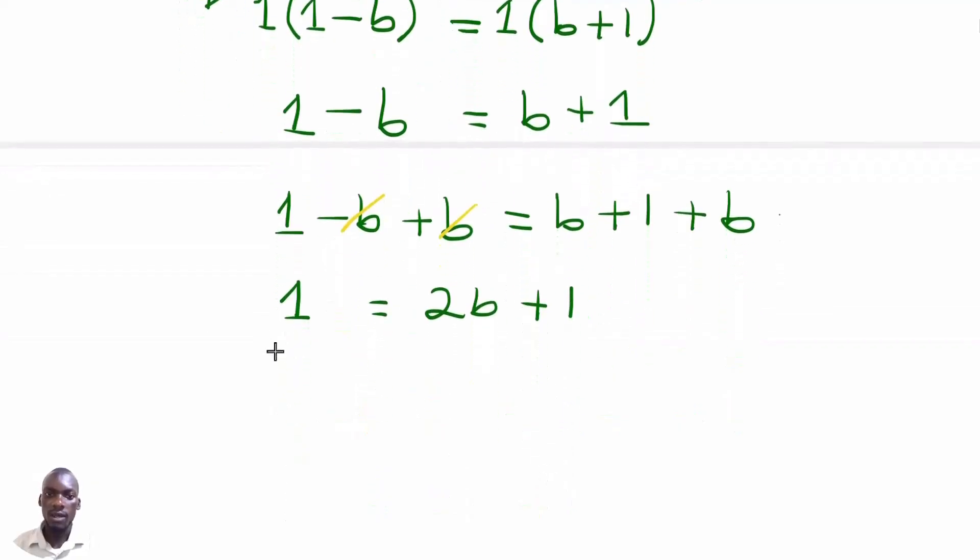So as we simplify, this is the same as having 2b plus 1 being equal to 1. So we take this 1 on the right hand side. We are going to have 2b plus 1 then minus 1 being equal to 1 then take away 1.